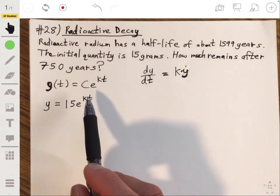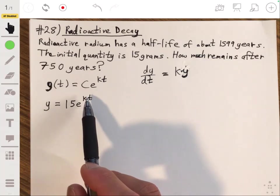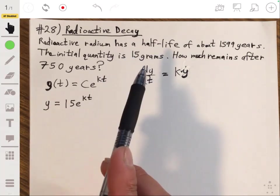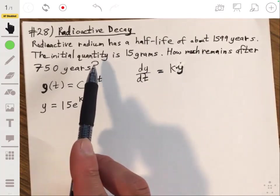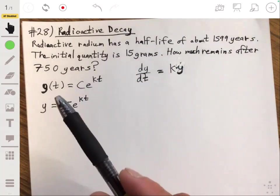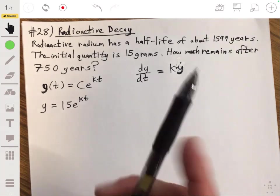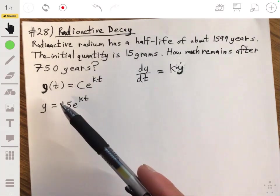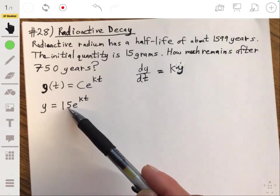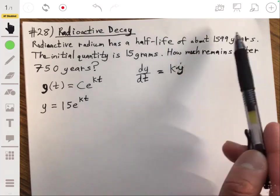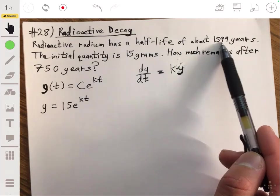So we know that so far. Now we need to figure out the value of k though. We need to figure out the value of k. Once you know the value of k, then you can figure out how much will remain after 750 years. So one way to figure out the value of k is just to pick an arbitrary amount.